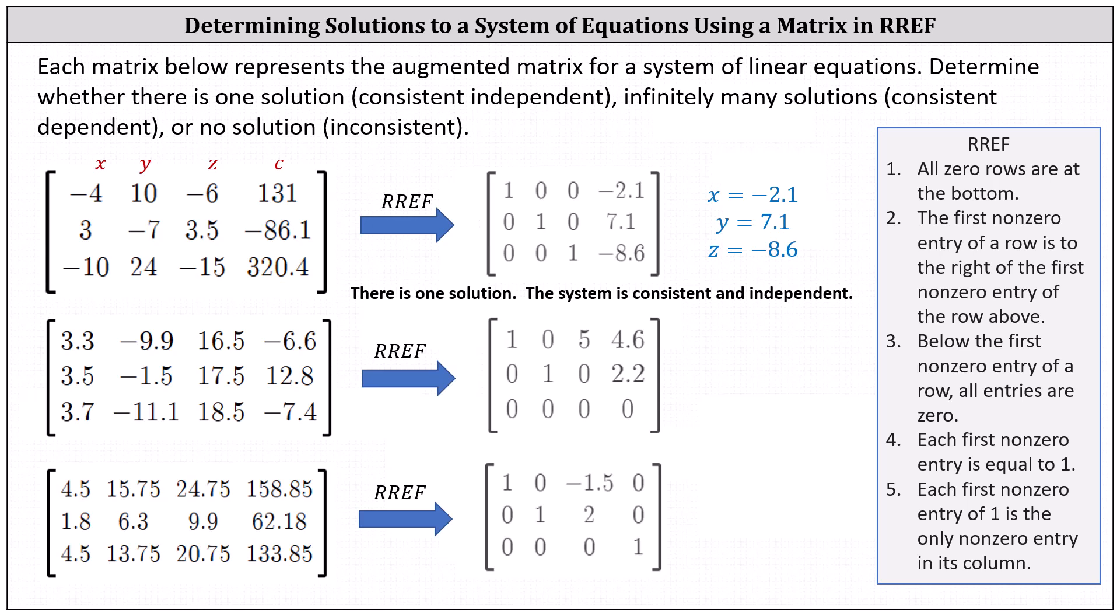And now let's take a look at the second augmented matrix in reduced row echelon form. Let's focus on this third row. Notice here we have an entire row of zeros, which as an equation would simply be zero equals zero. Zero equals zero is always true, which indicates the system has an infinite number of solutions, and the system can be classified as consistent and dependent.